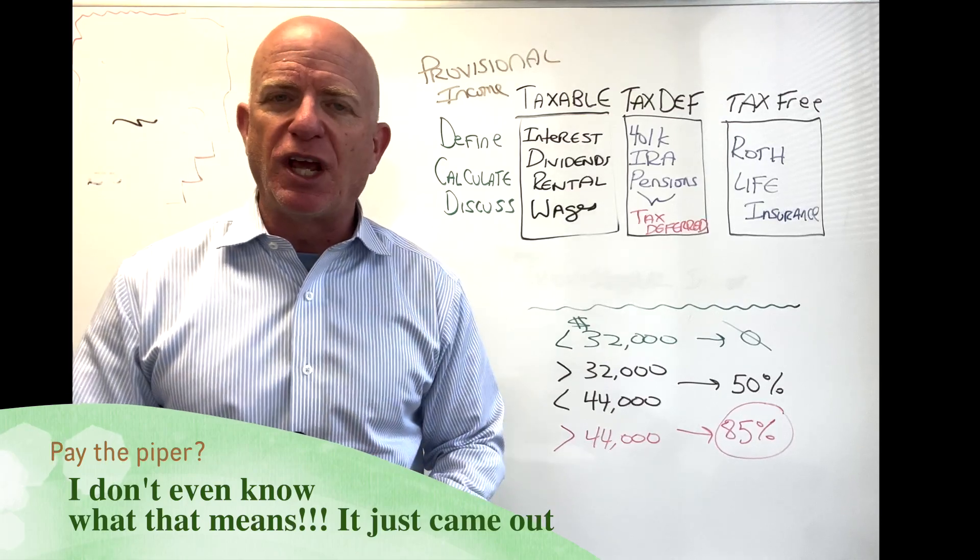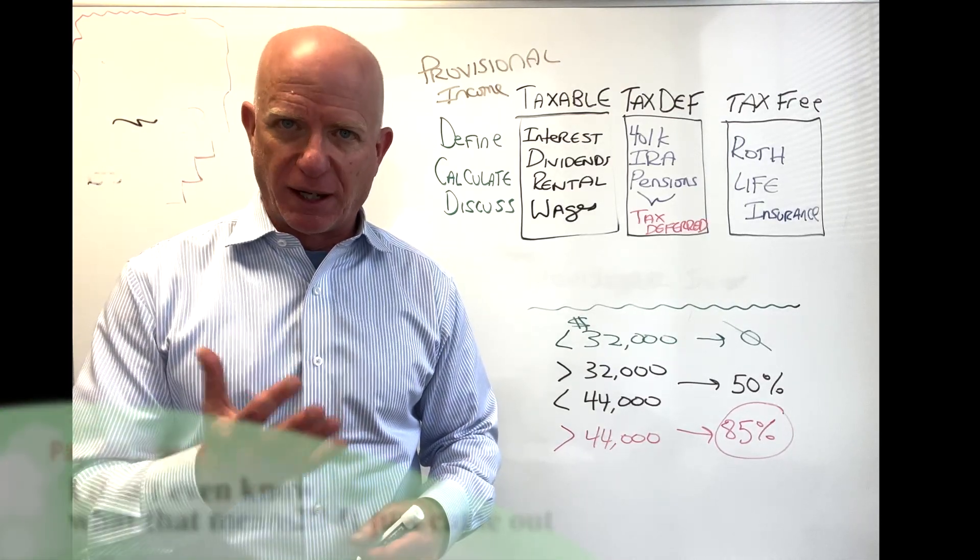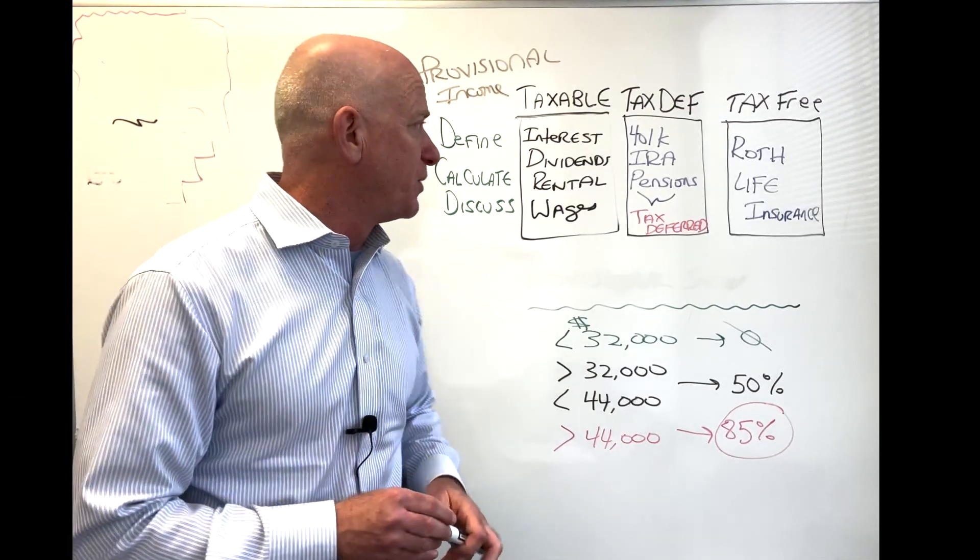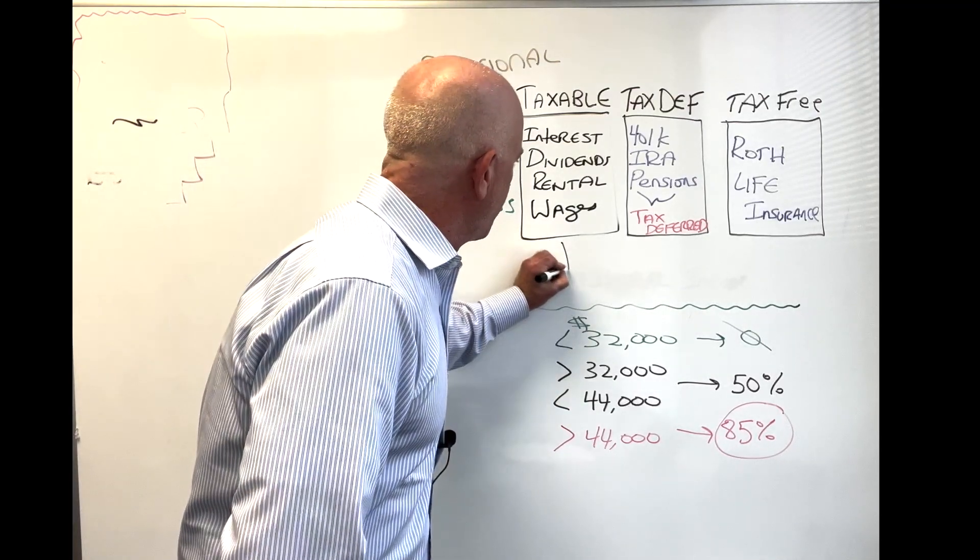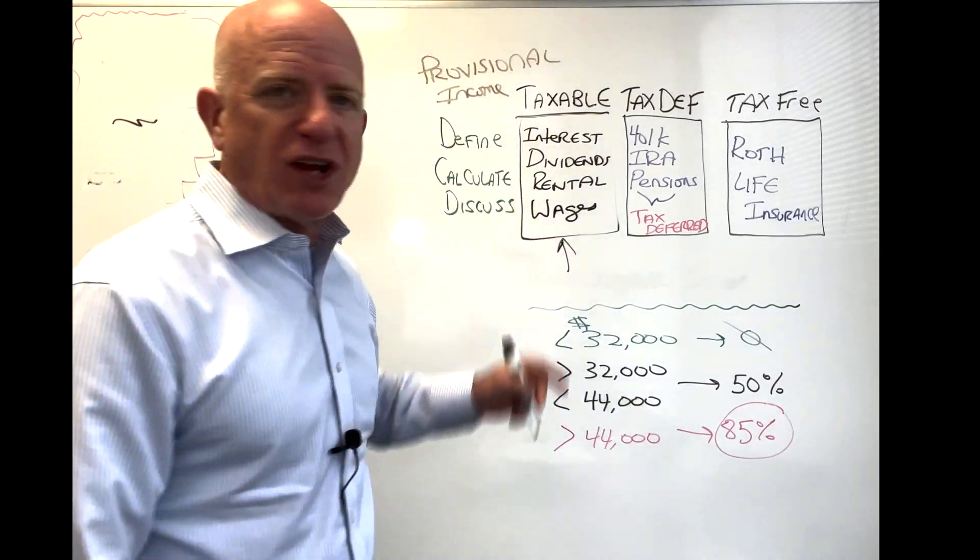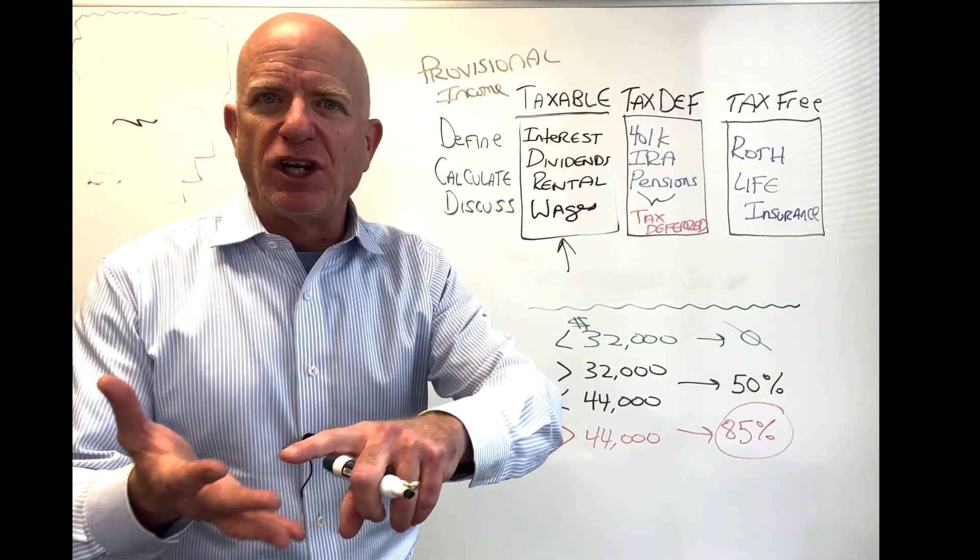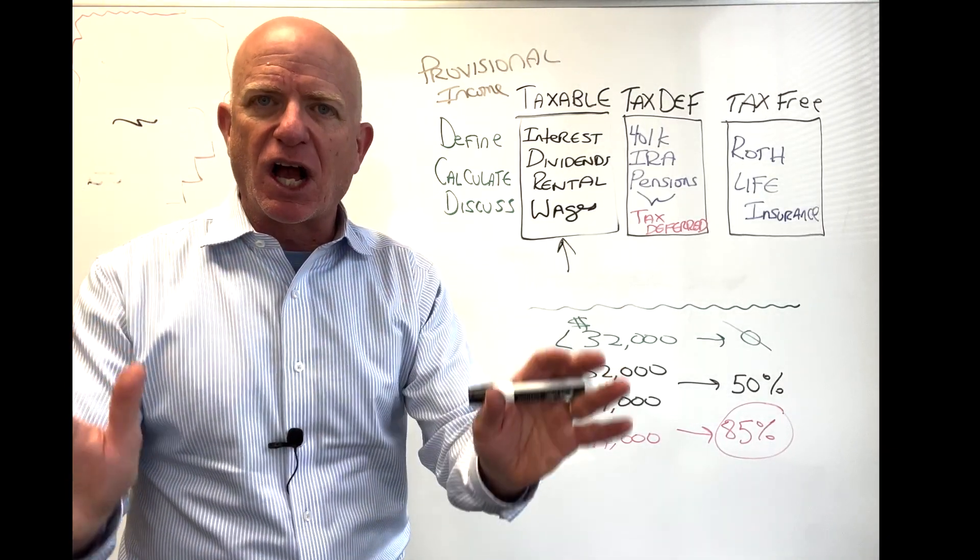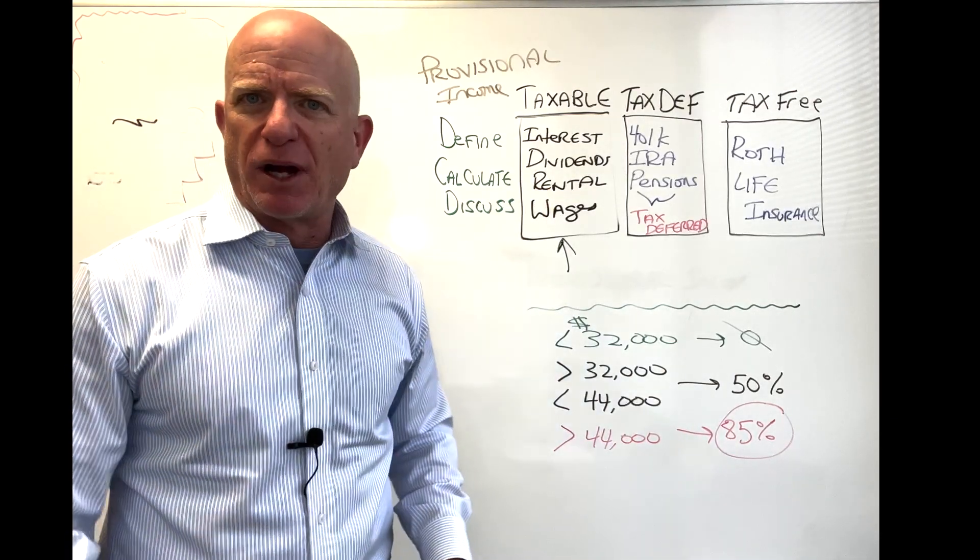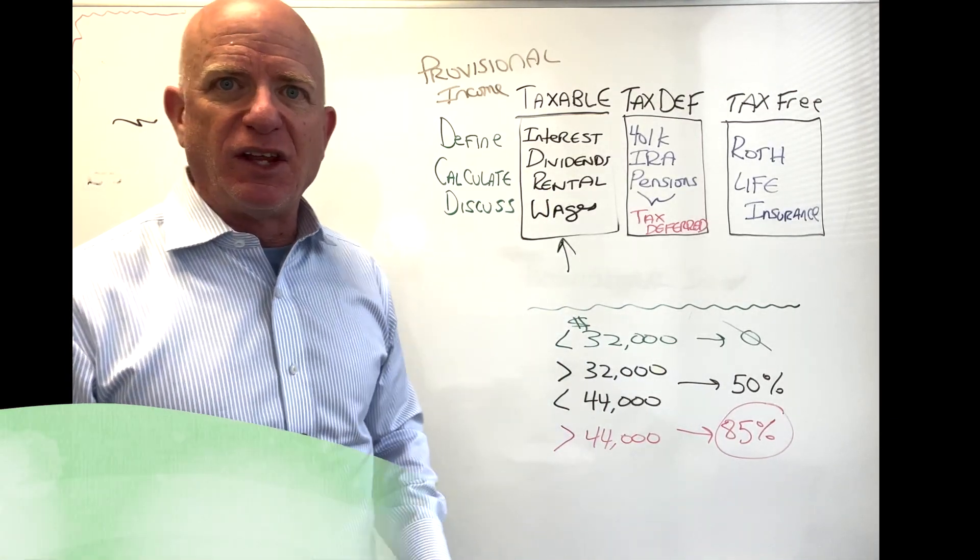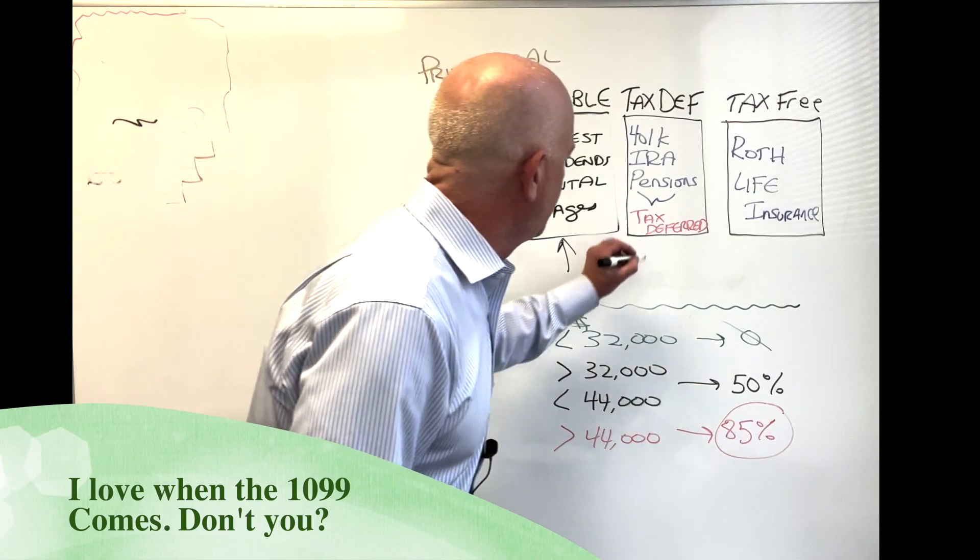So this is the computation that the IRS does. Again, provisional income. This is what they do: they take all the income from this bucket, your taxable bucket, so dividends, interest, rental income, wages, anything that comes in this taxable bucket. You know because you get a 1099 at the end of the year. Then we have the tax-deferred bucket.